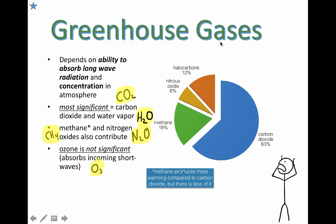Ozone (O₃) is significant as a greenhouse gas, but it's also important for blocking extra UV radiation. When we look at the overall distribution of gases and their impact on the enhanced greenhouse effect, carbon dioxide by volume is the main one. It's important to note that methane produces more warming compared to a molecule of carbon dioxide, but because there's less of it, it has an overall smaller effect. Molecule to molecule, one molecule of methane does more damage than one molecule of carbon dioxide, but by volume, carbon dioxide is our main culprit.